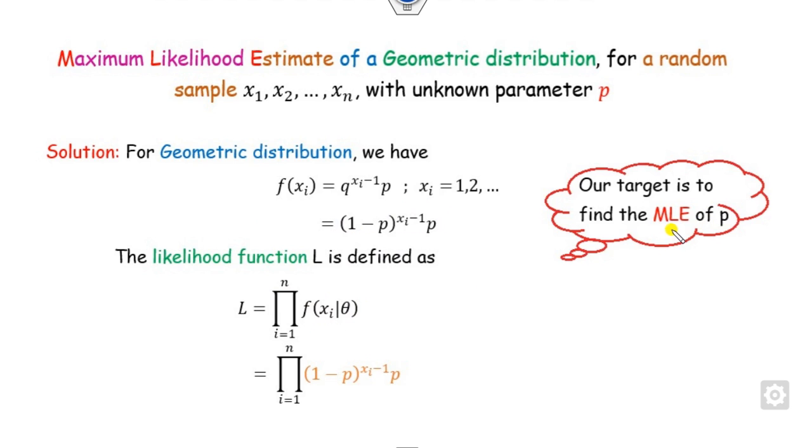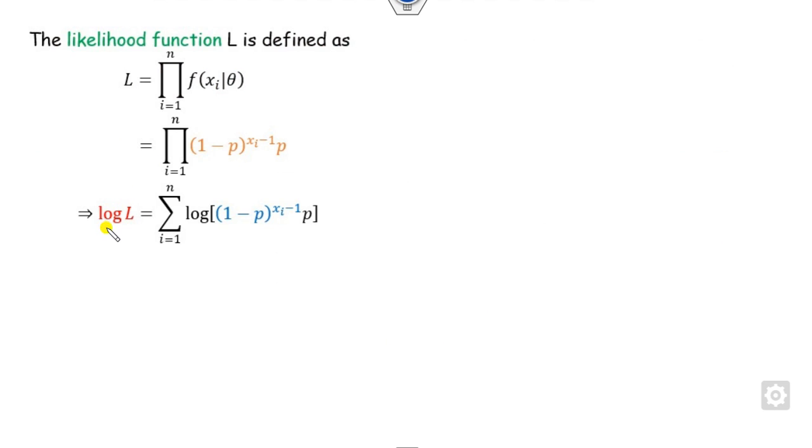Now how do you take the maximum? We have to take the partial derivative with respect to parameter P. Since this is a product, it's difficult to take this derivative directly. So we have to take the logarithm.